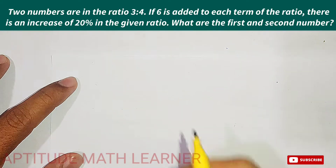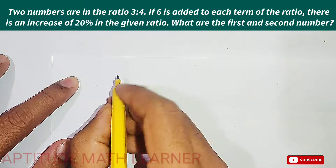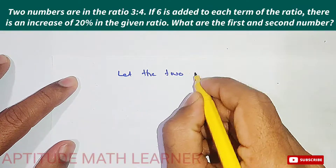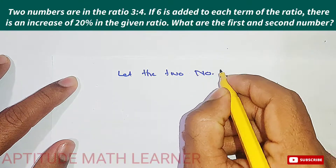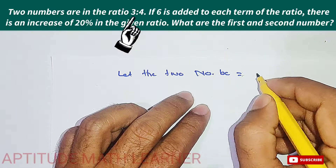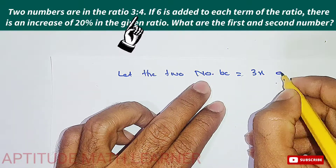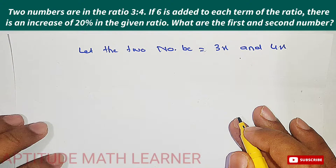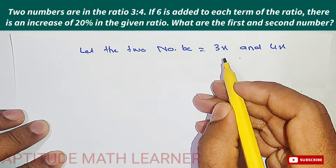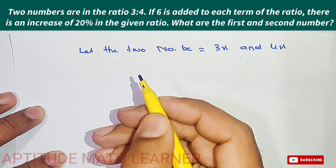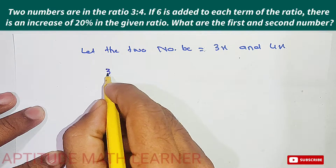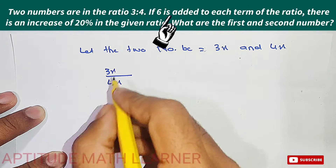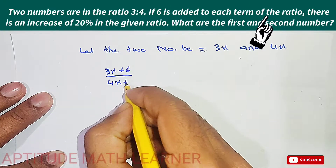To solve this, we let the two numbers be 3x and 4x. So we are having the numbers as 3x upon 4x. Now if 6 is added to both terms, we add 6 to each.